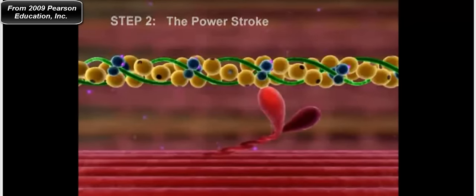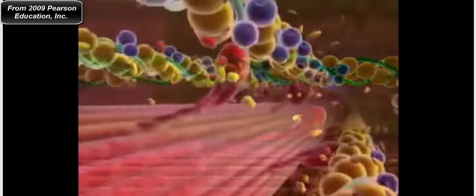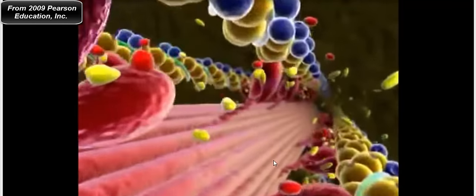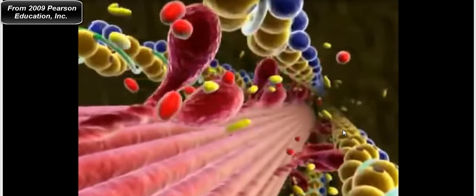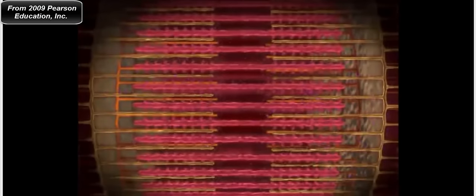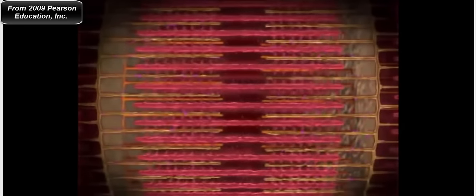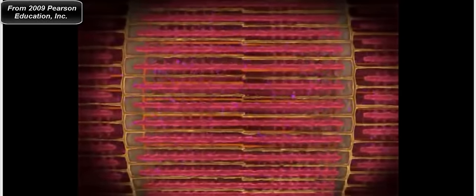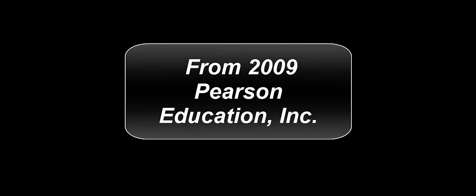Now we're watching this in real time with many myosin molecules. In the presence of ATP, they continuously pull the actin filaments toward the M line. On a more macroscopic scale, the thin filaments are pulled toward the M line of the sarcomere — all due to myosin contraction.